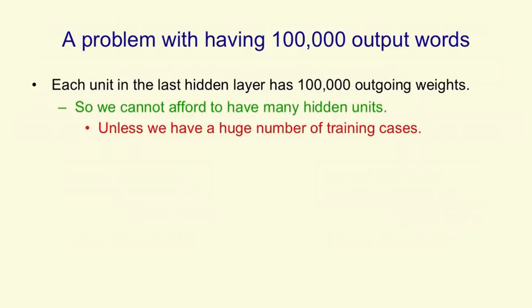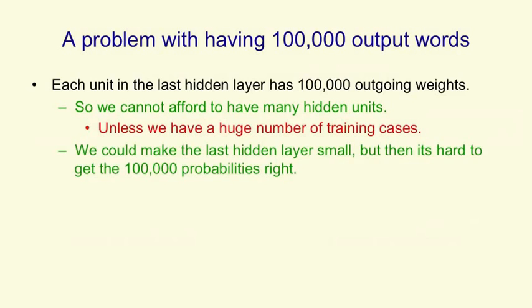That's not necessarily true. We might have a huge number of training cases so some organization like Google might have so much training data that it can afford to have a very big softmax layer. We could try and make the last hidden layer small so we don't need too many weights, but then we have the problem that we have to get the hundred thousand probabilities of the various words that might come next fairly accurately right.